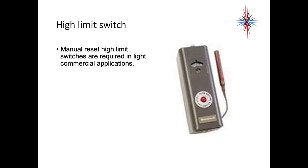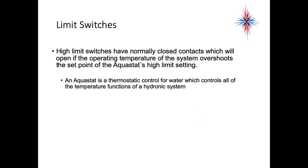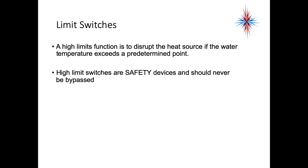This is an example of a manual reset high limit switch — it's required in light commercial applications and this one actually straps onto a pipe. The high limit switches have a normally closed contact which will open if the temperature of the system overshoots the set point of the Aquastat's high limit setting. An Aquastat is a thermostatic control for water which controls all of the temperature functions of a hydronic system. A high limit function is to disrupt the heat source if the water temperature exceeds a predetermined point, and high limit switches are safety devices and should never be bypassed.